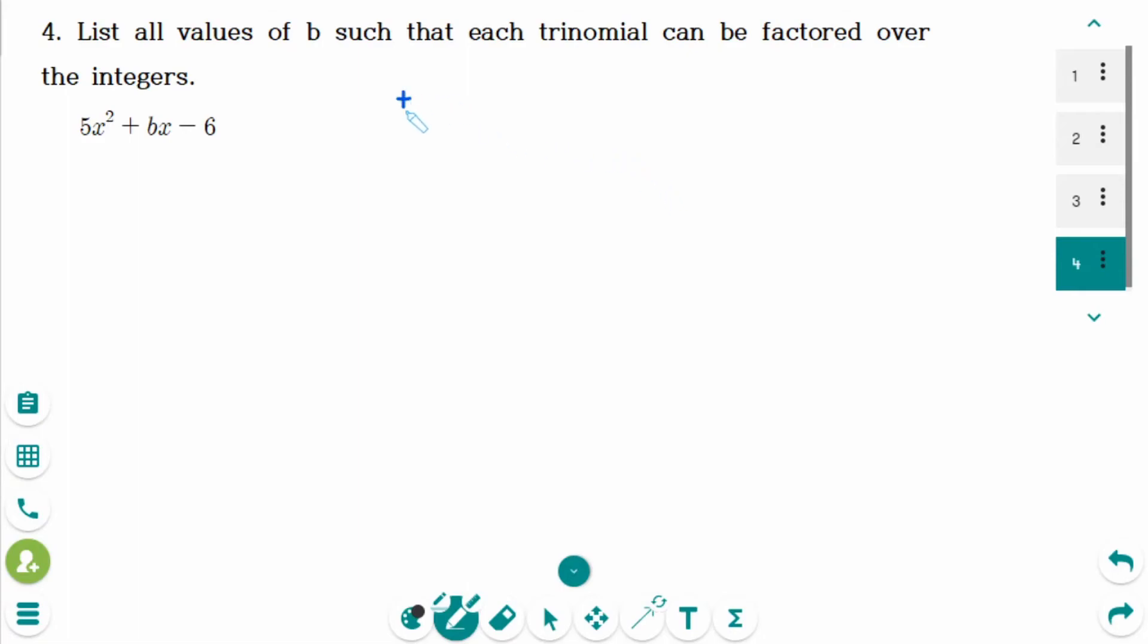Find the two numbers that have a sum of b and the product of minus 30, 5 times minus 6. But we don't know the value of b.